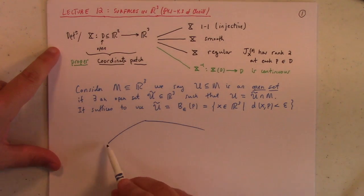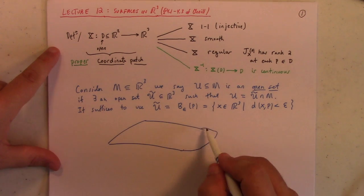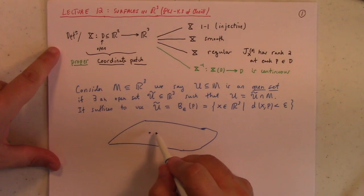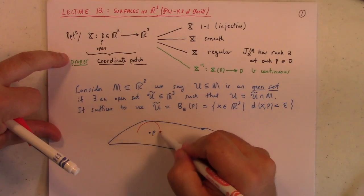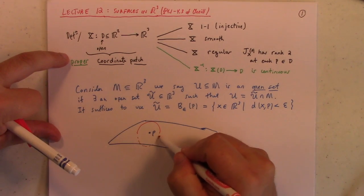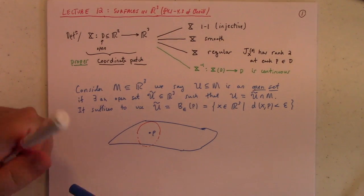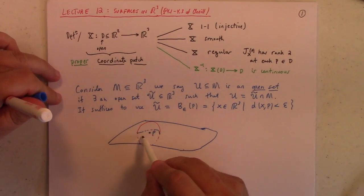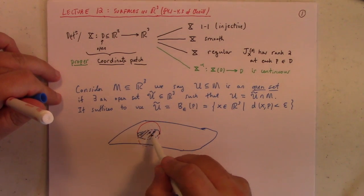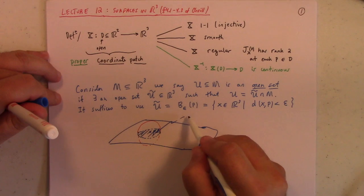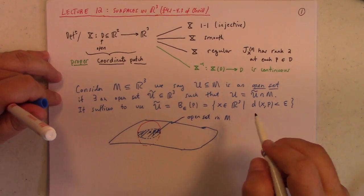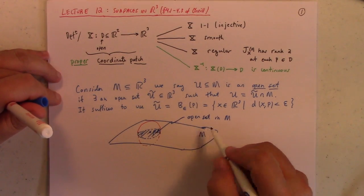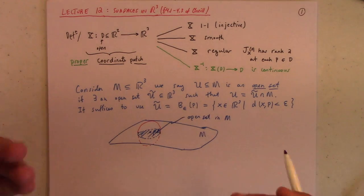So, here's the surface, roughly speaking. So you pick some point in the surface and open set. What you do is you take an open ball in R3. And that open ball will intersect the surface in some way. And then this is basically your basic open set in M. And that's the notion of open set we use for a surface, although I haven't defined surface yet.